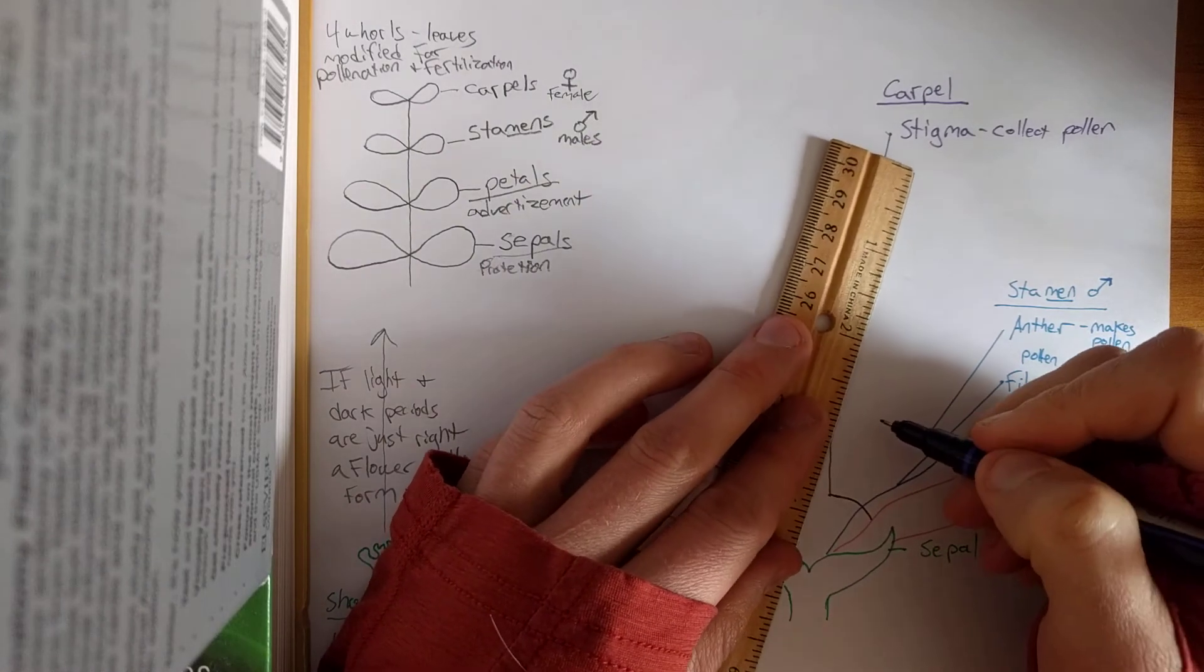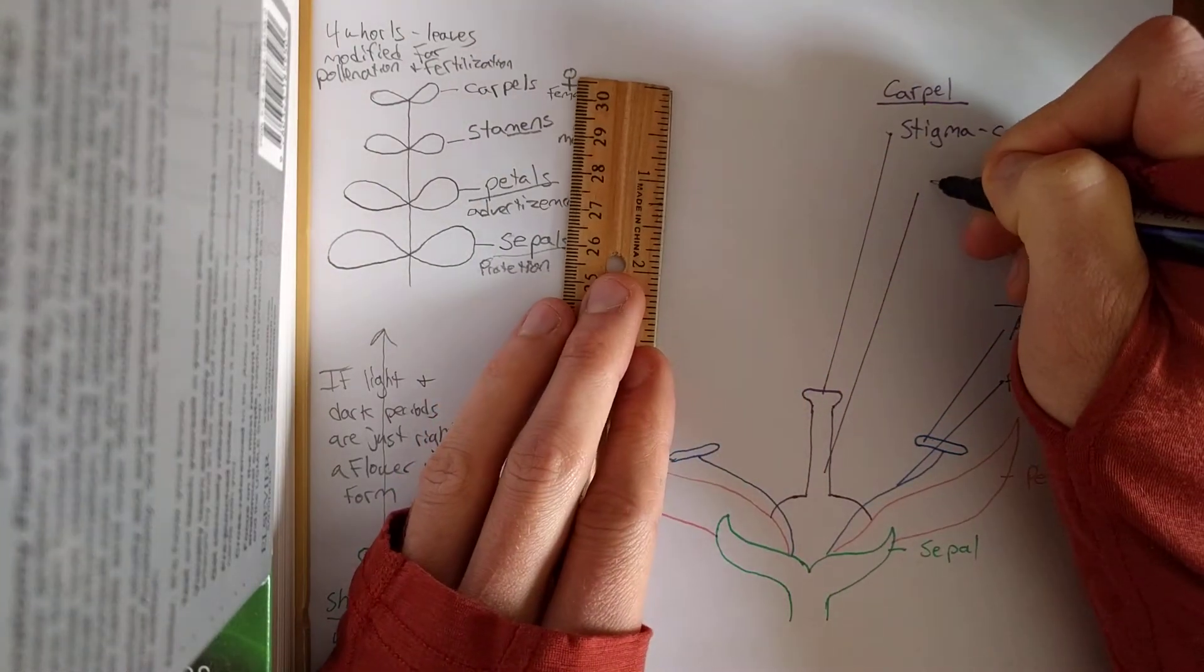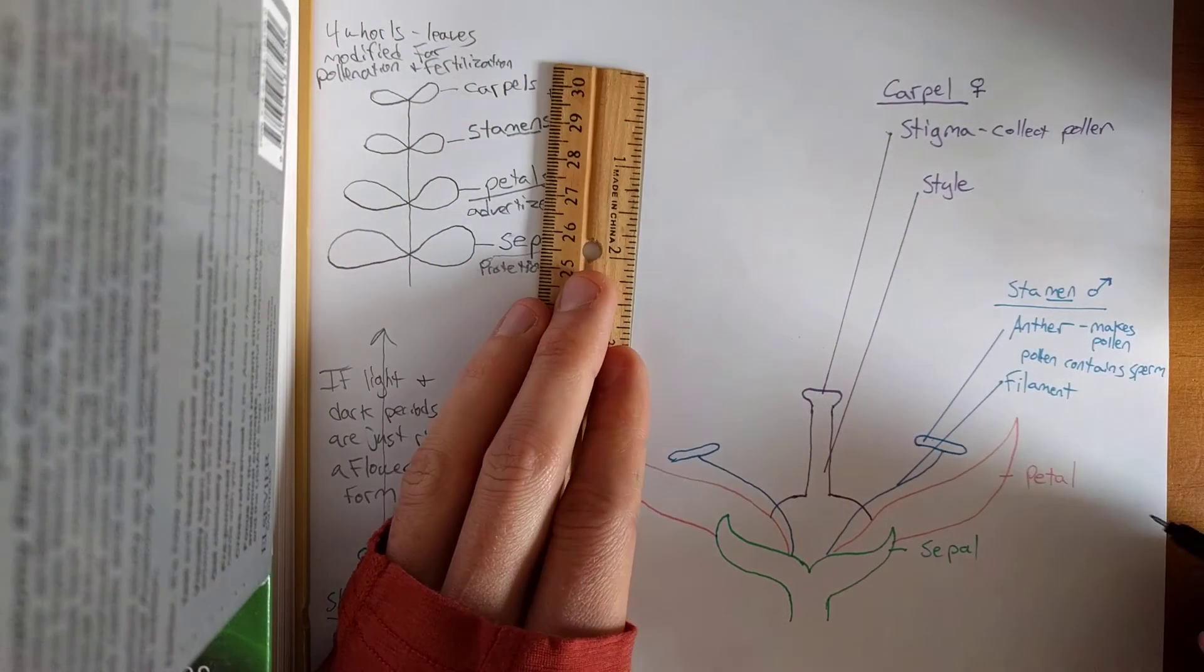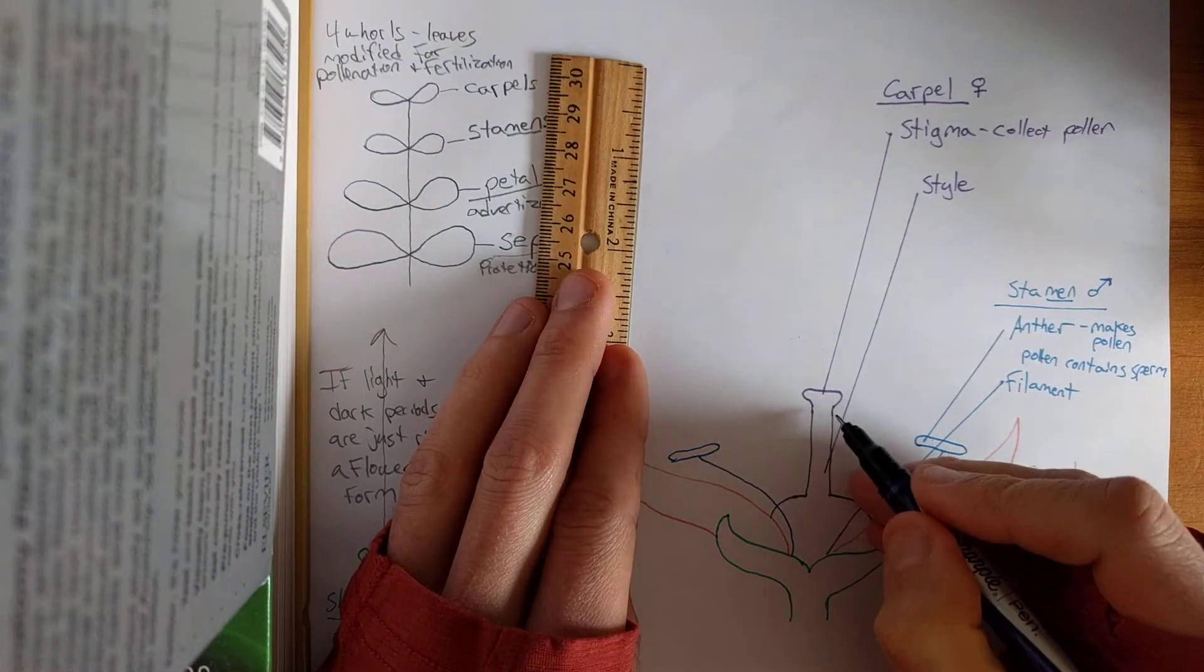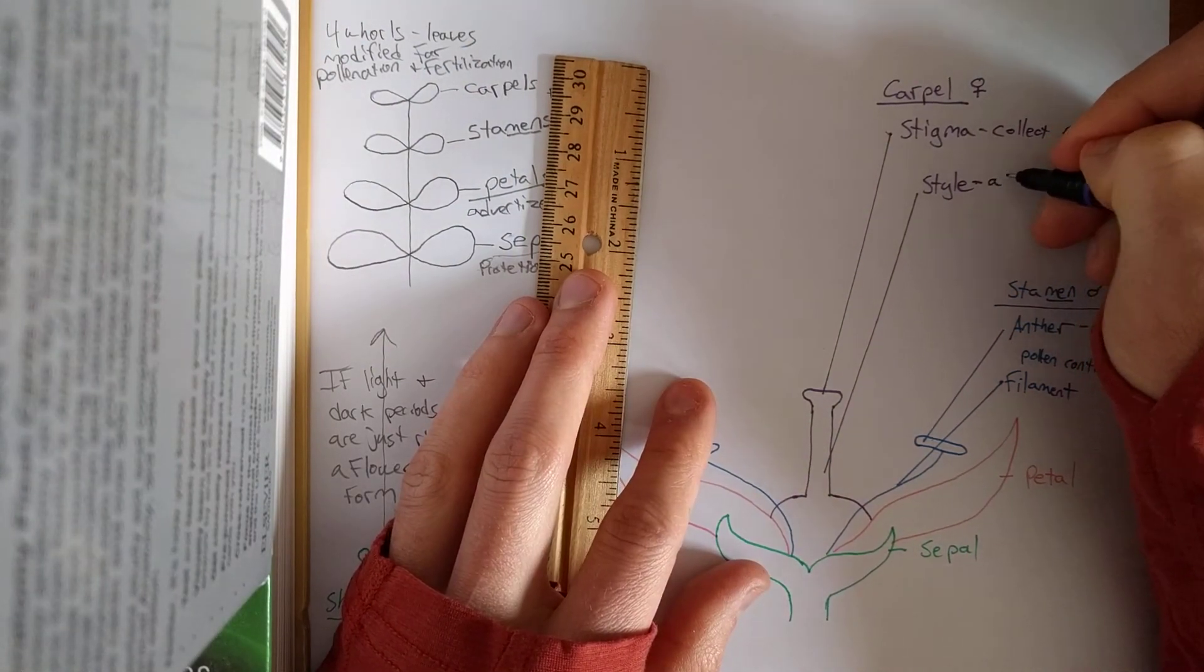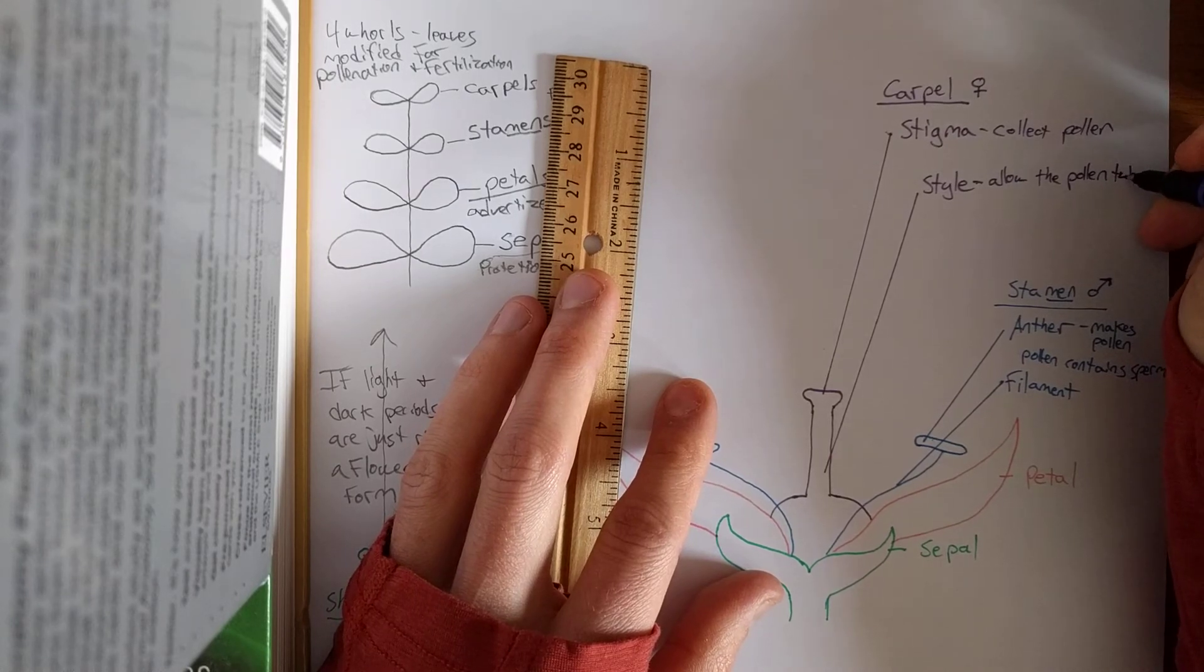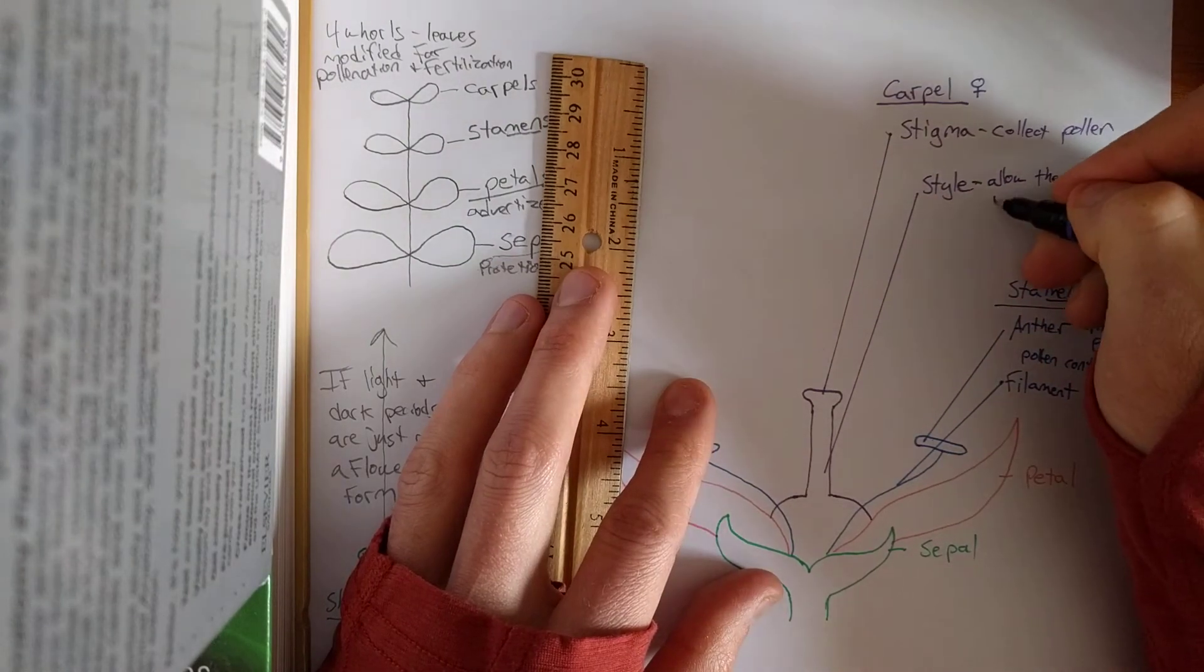The next piece up is the extension piece away from the base. And that is the style. Alright, ladies have style. Silly, but might help. The style. Again, it's to raise the stigma away from the bottom. But furthermore, it's to allow the pollen tube. The pollen actually grows a tube that reaches down to the eggs. So it allows the pollen tube to reach an egg.